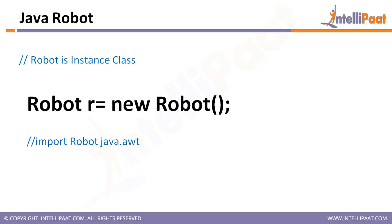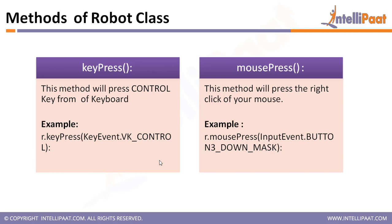To use the methods of Robot class, you need to create an object: Robot r = new Robot(). This Robot class is imported from the java.awt package. The class has many methods available.